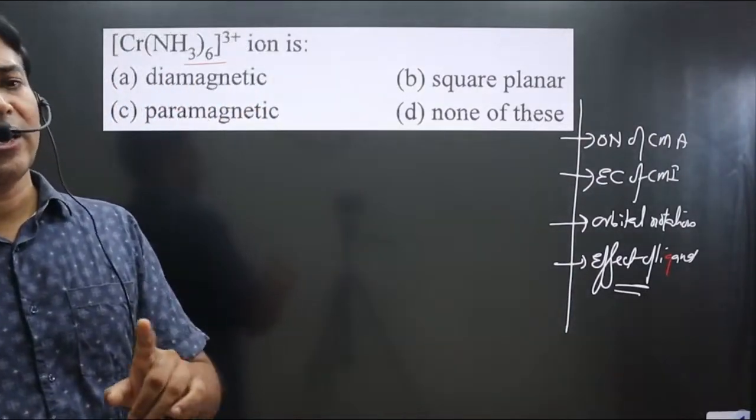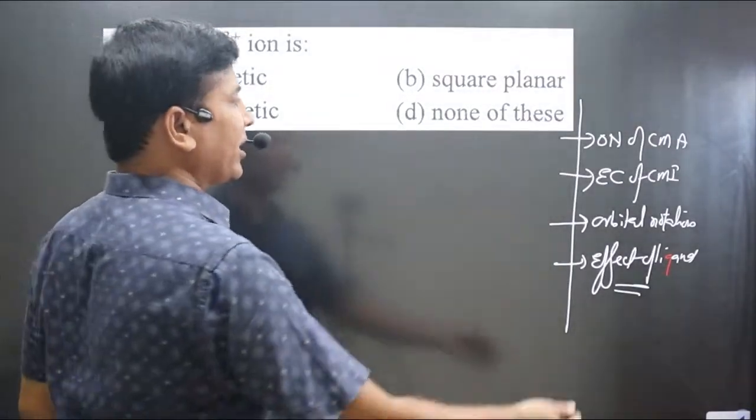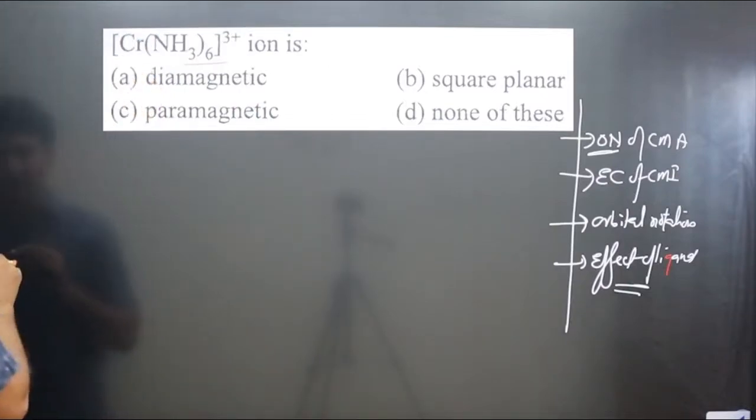If weak field ligand is there, no pairing of electrons. Follow these steps. First of all, we calculate the oxidation number of the central metal atom. You can see chromium is the central metal atom.